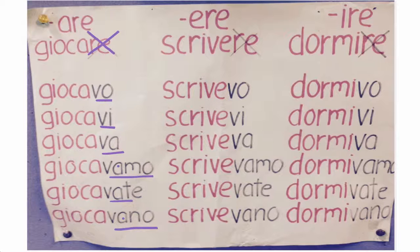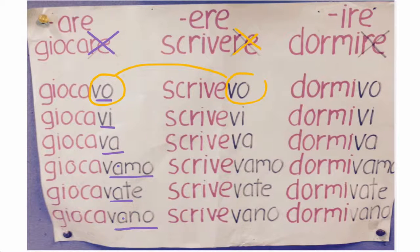It is the same thing — we are simply getting rid of the RE. We copy out SCRIVE, and as you can see, the endings are identical: VO, VI, VA, VAMO, VATE, VANO. Again, pronunciation: SCRIVEVO, SCRIVEVI, SCRIVEVA, SCRIVEVAMO, SCRIVEVATE, SCRIVEVANO.